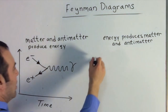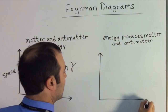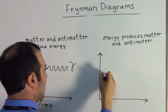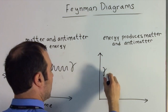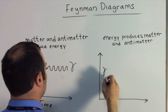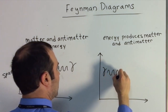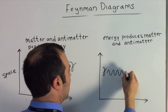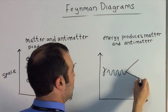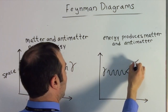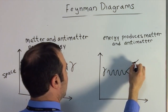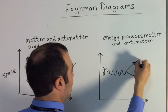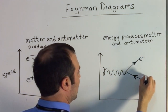Similarly, we can have another diagram where a photon is coming in. That photon has a vertex which breaks into two particles — one actually moving forwards in time, one moving backwards in time. This could be our electron, and this could be our positron.